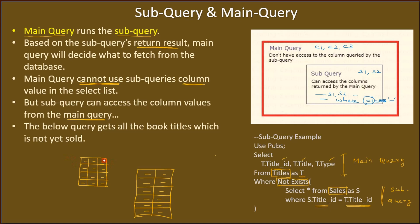First, a scan is done on the main query. We are picking title ID, title, and type. For each record, the subquery is accessed. For the first record, the subquery runs: SELECT * FROM sales AS S WHERE S.title_id = T.title_id. This title ID is given and a scan is performed based on that. The operator here is NOT EXISTS.